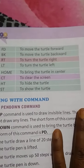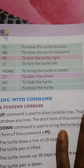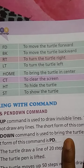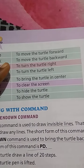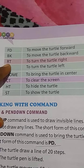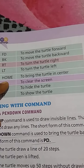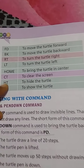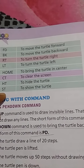First, you should know the instructions and commands used in Logo. FD means to move the turtle forward. BK means to move the turtle backward. RT means to turn the turtle right. LT means to turn the turtle left. Home brings the turtle to the center. CS clears the screen. HT hides the turtle. And finally, ST shows the turtle.